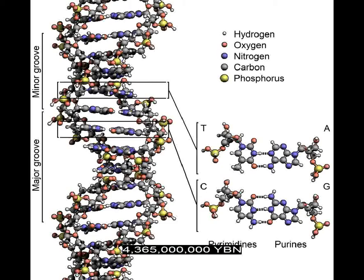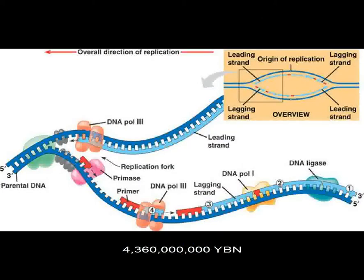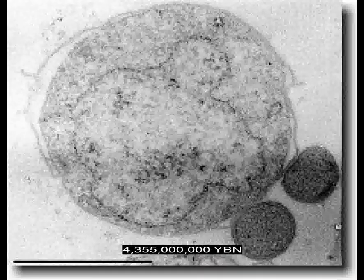The first deoxyribonucleic acid, DNA molecule. A protein evolves that allows the assembly of DNA from RNA—a ribonucleotide reductase. This protein changes ribonucleotides into deoxyribonucleotides, which allows the first DNA molecule on Earth to be assembled. A protein can copy DNA molecules—a DNA polymerase. Transcription: a protein assembles RNA from DNA. The first cell on Earth, a bacterium. DNA is surrounded by a membrane of proteins made by ribosomes. The first cytoplasm.